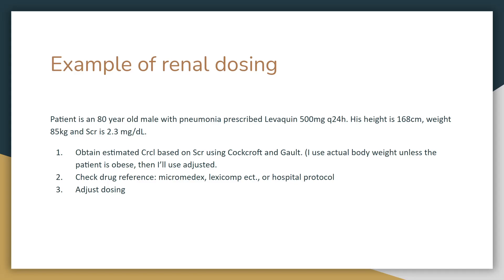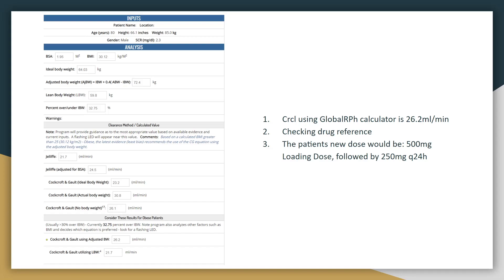The next example is very similar. We've got a patient that's an 80-year-old male with pneumonia prescribed Levaquin 500 Q24. His height is 168, weight is 85, serum creatinine 2.3. Same steps again: we're going to get a creatinine clearance, check our drug reference, and then adjust the dose. Using GlobalRPH's calculator, we end up with a creatinine clearance of 26.2.